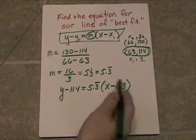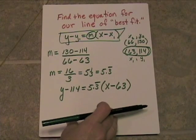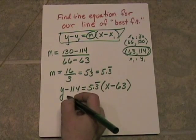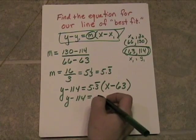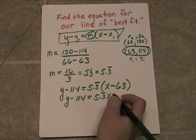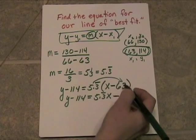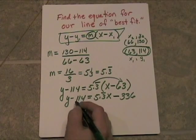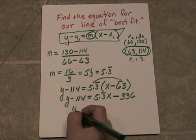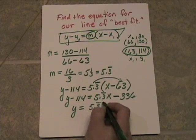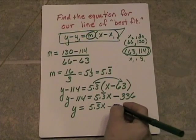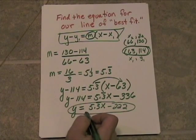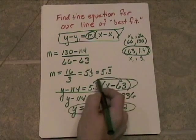Even though this is a perfectly good equation, let's go ahead and clean it up just a little bit and get it into slope intercept form. I'm going to go ahead and distribute the 5.3 repeating, and I'm going to get y minus 114 is equal to 5.3 repeating times x minus 336. I'll simply add 114 to both sides, and I will get y equals 5.3 repeating x minus 222. So there we see the equation in slope-intercept form, and here it was in point-slope form.